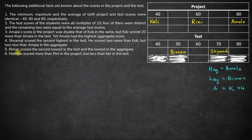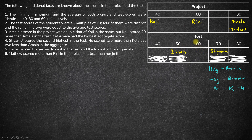Matthew scored more than Rini in the project but less than her in the test. In the project, if Rini scores 60, Matthew has to score 80 — but wait, that conflicts, so Matthew scores less than Rini in test. Also, Kohli scored 20 more than Amla in the test. So there are two possible cases for Amla and Kohli in the test: either Amla scores 40 and Kohli scores 60, or Amla scores 60 and Kohli scores 80.